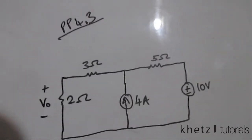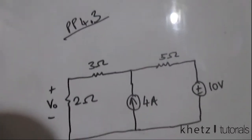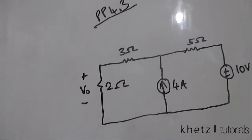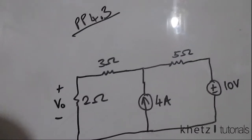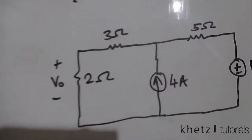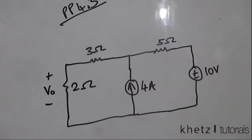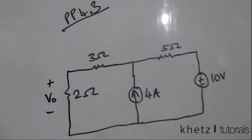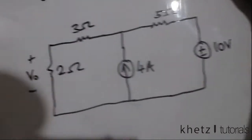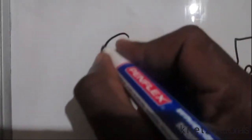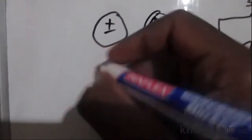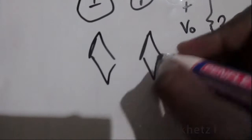Welcome to CAT Tutorials. In this video I'll be covering practice problem 4.3. This section talks about superposition — the voltage or current across an element is the algebraic sum of the contributions of independent sources. Independent sources are shown by circles, either a voltage source or a current source, and dependent sources are shown using a diamond shape.